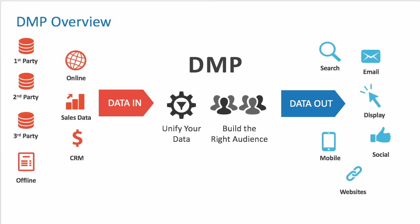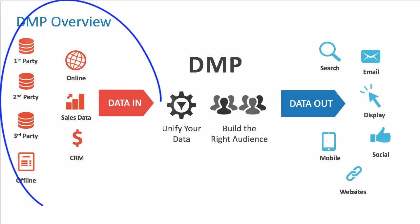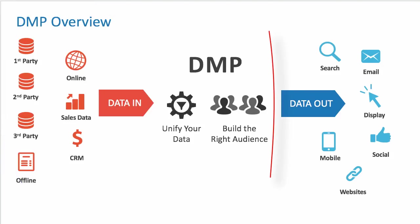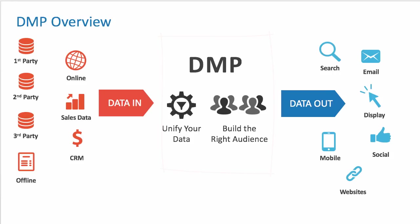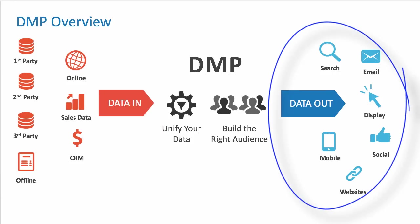In a nutshell, we take our first-party, second-party, and third-party data, along with offline data, CRM data, sales data, and other online data sources. It goes into a DMP platform, which hopes to unify all that data, build audiences, and then send it out across the various marketing channels and devices.